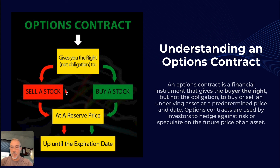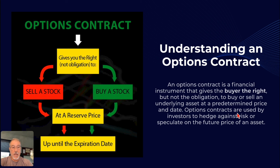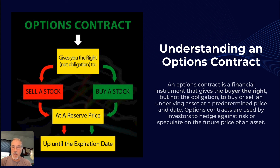Whether it's a buy or a sell depends on whether you were the buyer or the seller of the option. It's a financial instrument, and contracts are often used by investors to hedge against risk or to speculate on the future price of an asset. Hedging against risk is why options originally came to be — it's a way that people can buy insurance on positions that they hold.